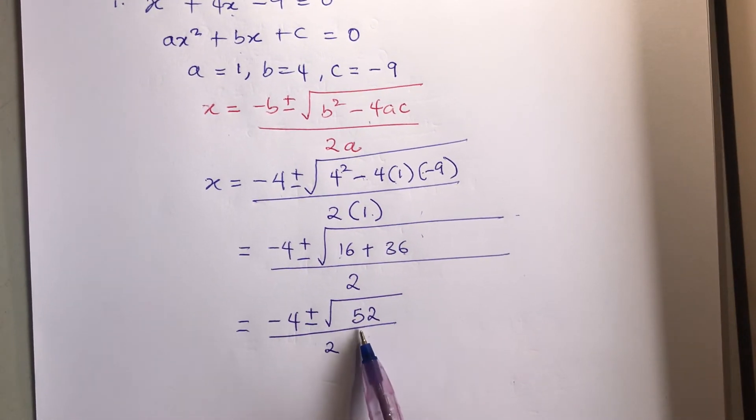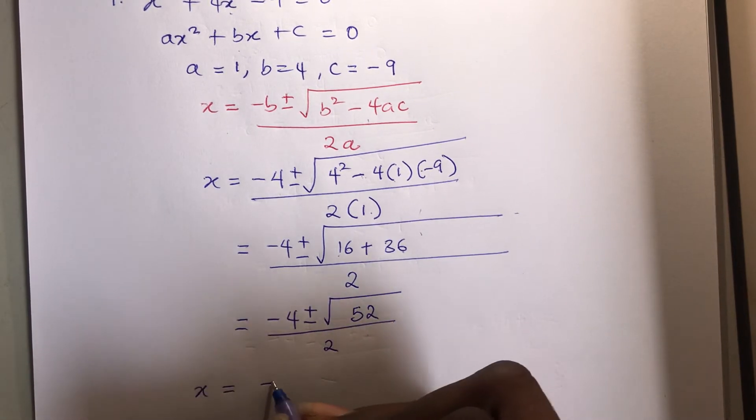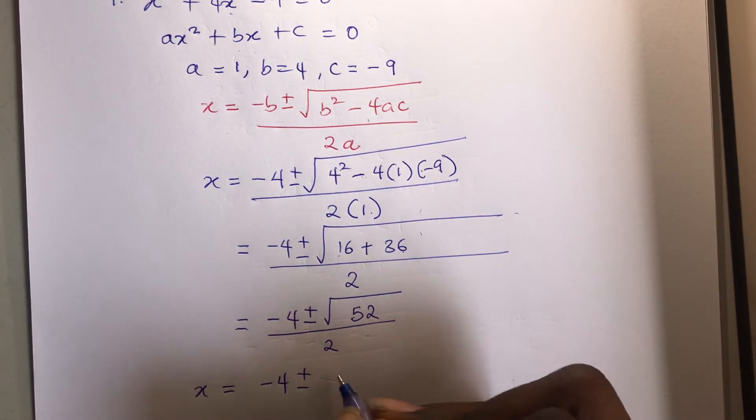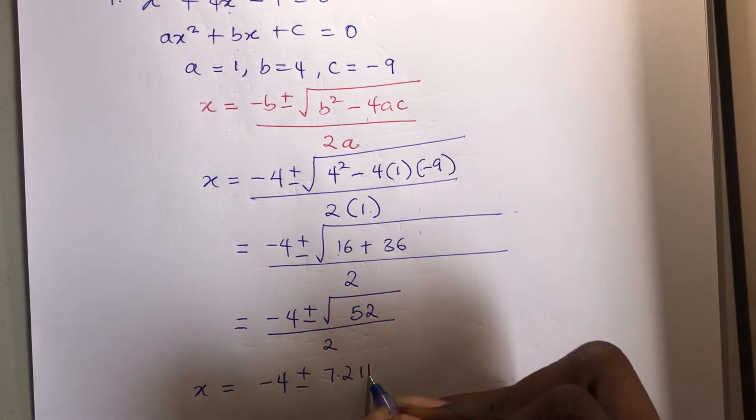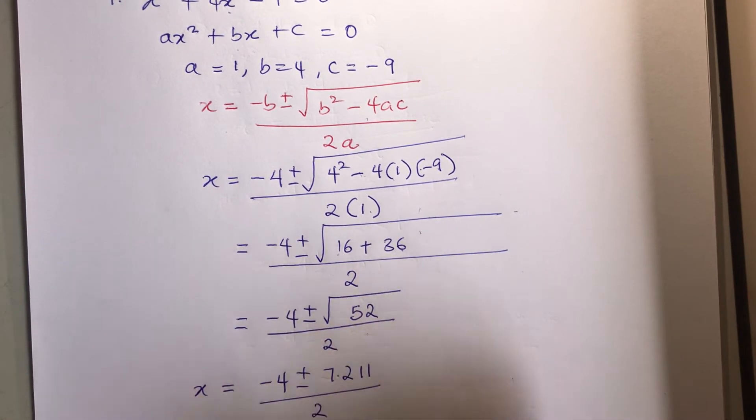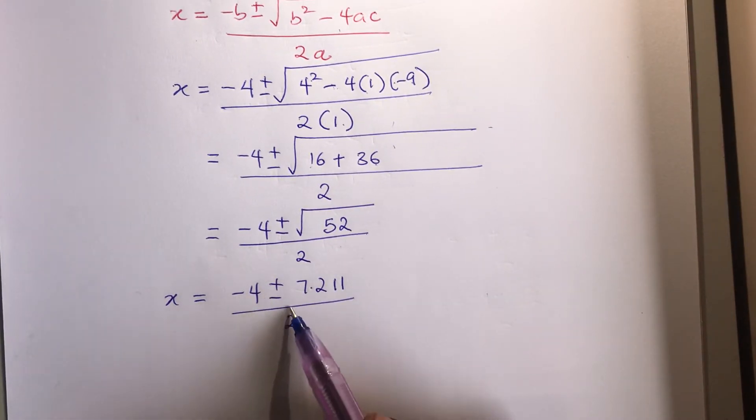So minus 4 plus minus the square root of 16 plus 36 is 52 all over 2. Now if you punch square root of 52 into a calculator you're going to get 7.211 all over 2. So this plus minus indicates that we have two values of x.